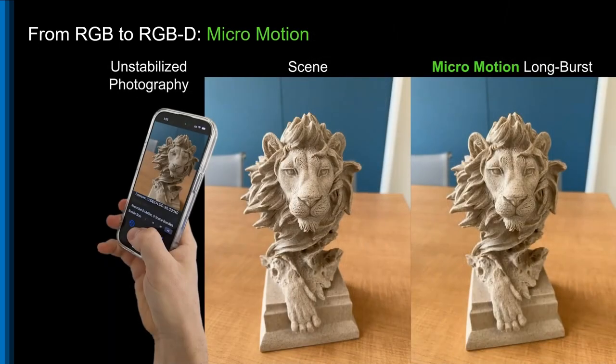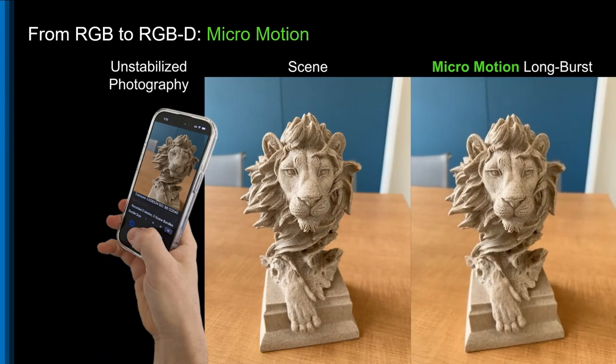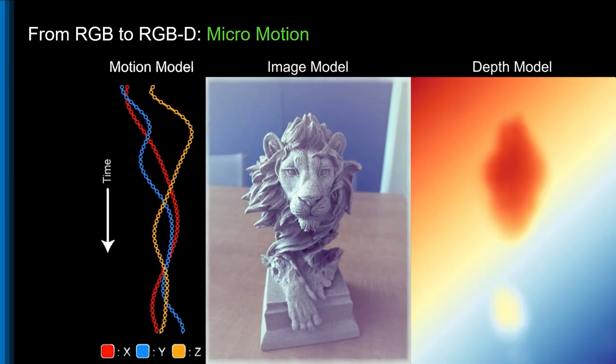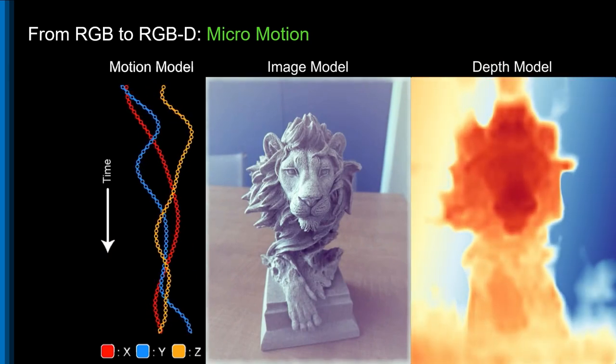This lion scene barely appears to be moving at all, captured with only a millimeter of hand motion, yet even under these conditions, shakes on a plane recovers valuable depth information.